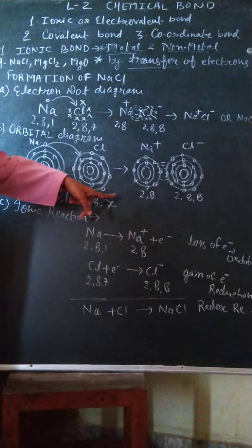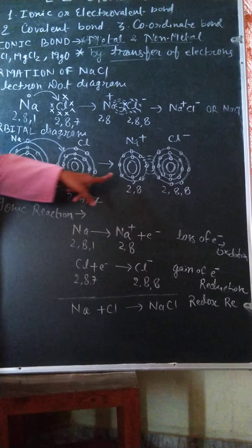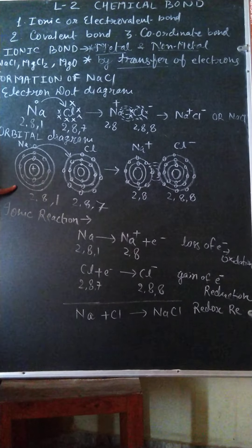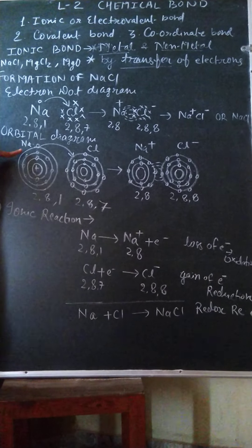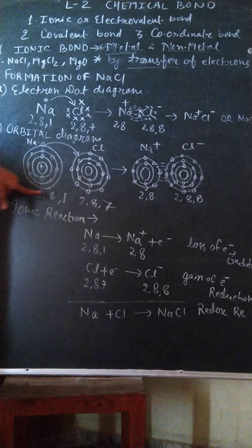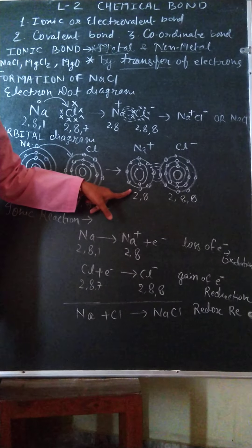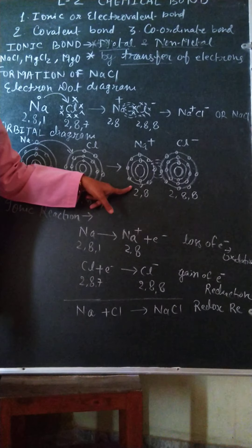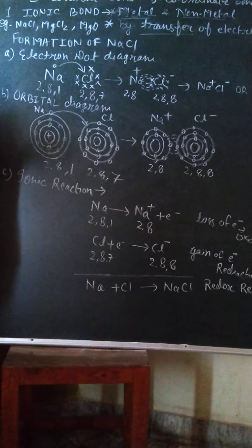It is very clear that the size of the cation is smaller than its parent atom, sodium. Because in sodium there are 3 shells, while in Na⁺ there are only 2 shells. So this completes the orbital diagram.